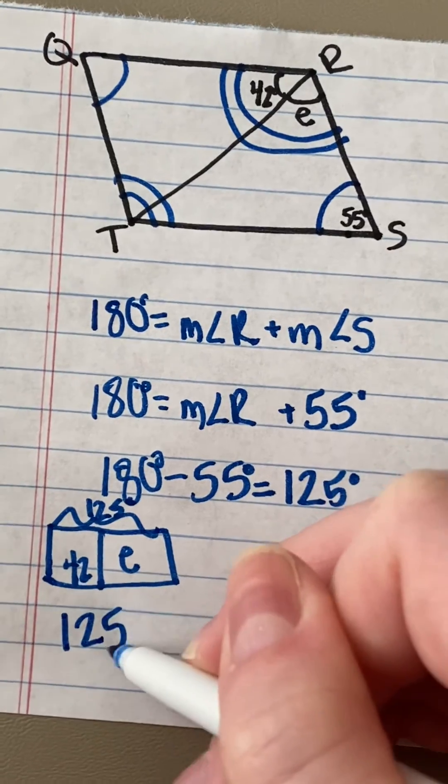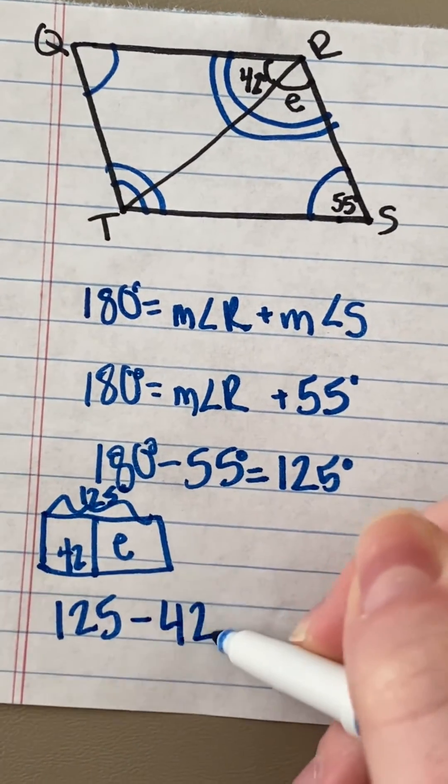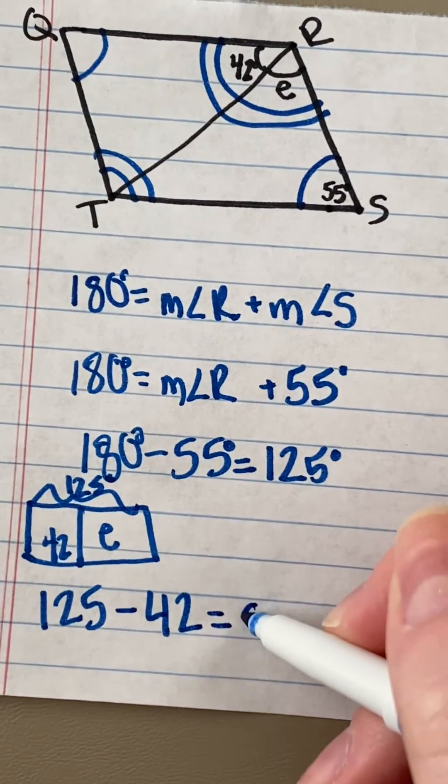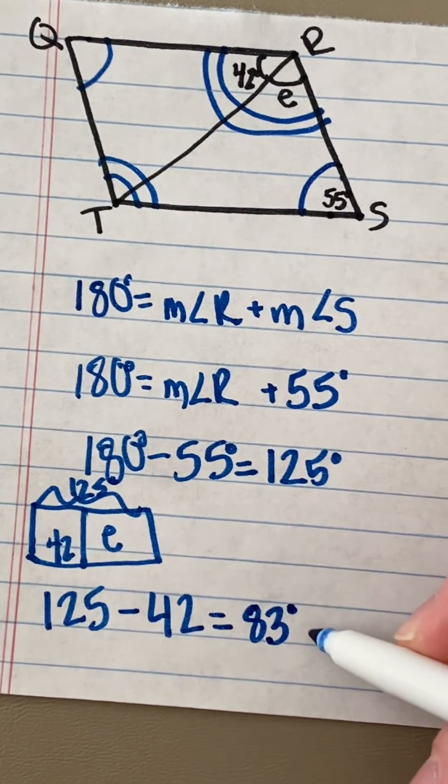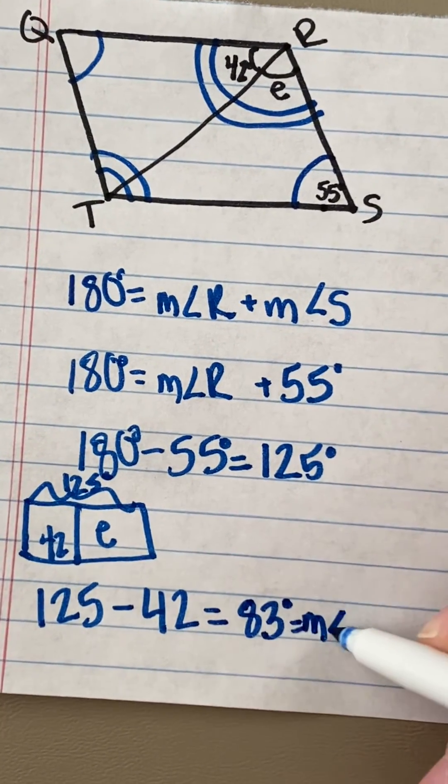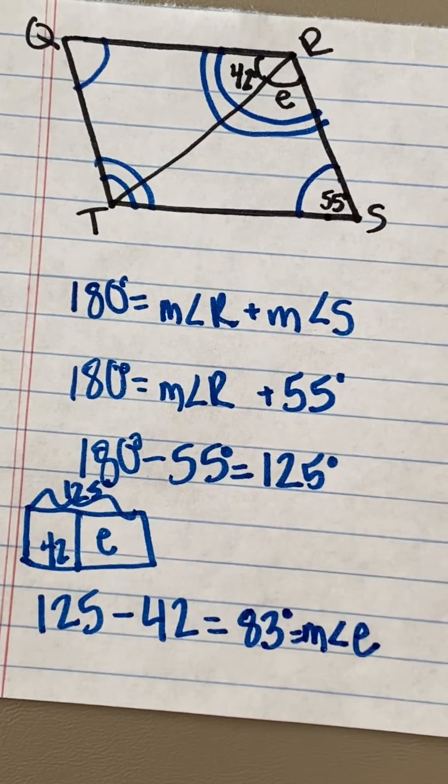So 125 minus 42 and that equals 83. So the measurement of angle E is 83 degrees.